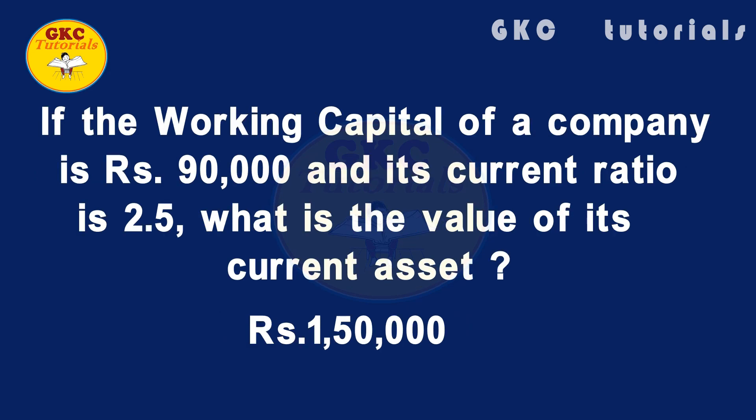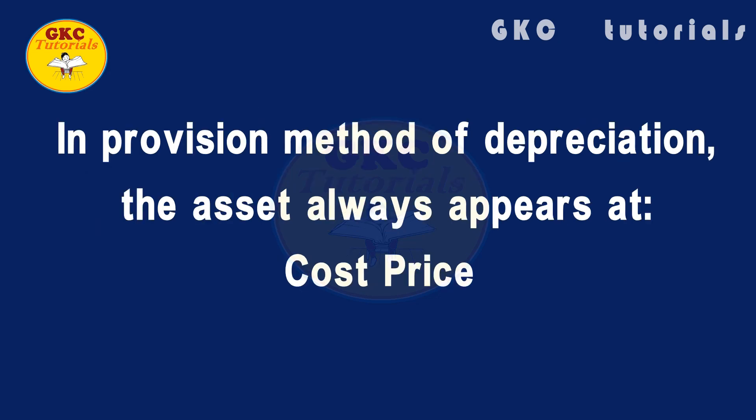Next question: if the working capital of a company is rupees 90,000 and its current ratio is 2.5, what is the value of its current assets? The answer is rupees 1 lakh 50 thousand.